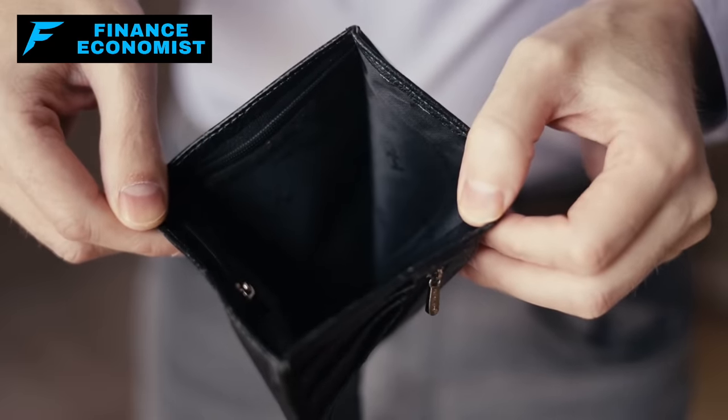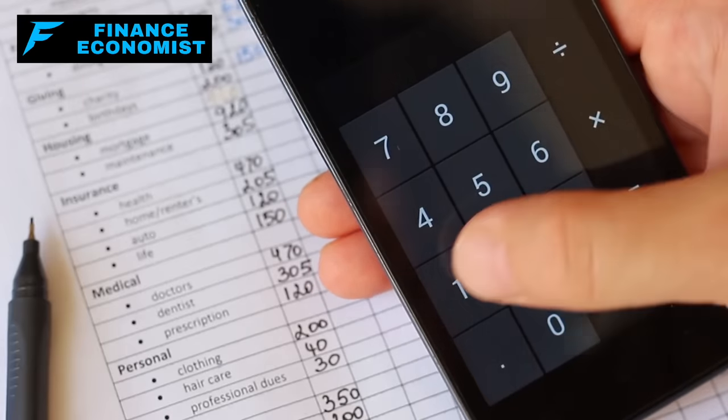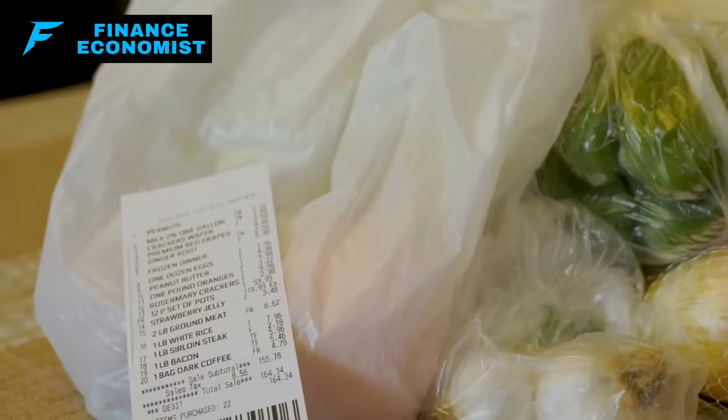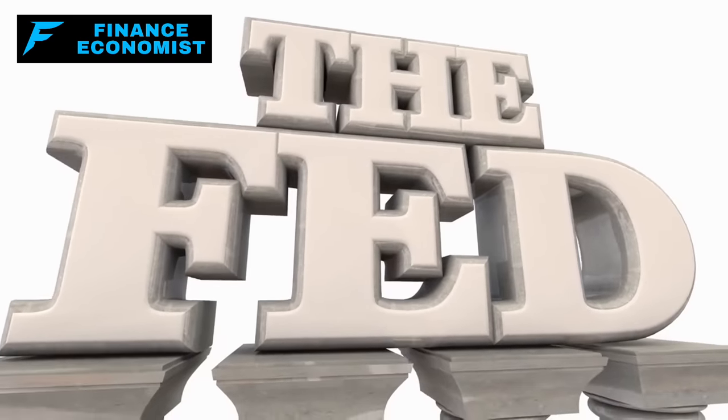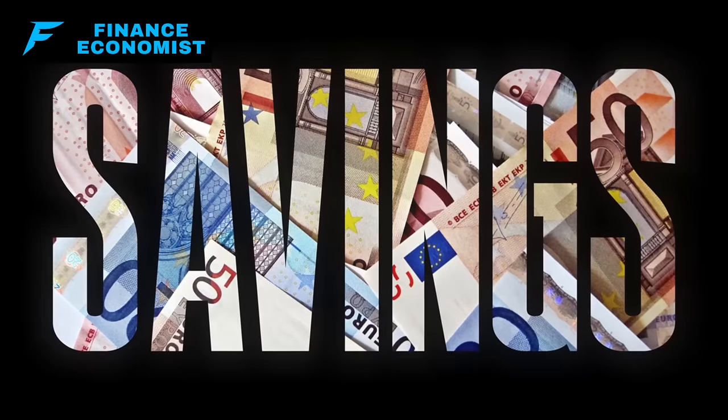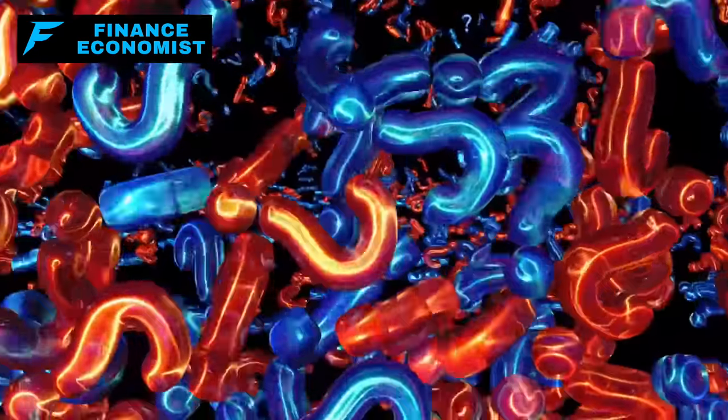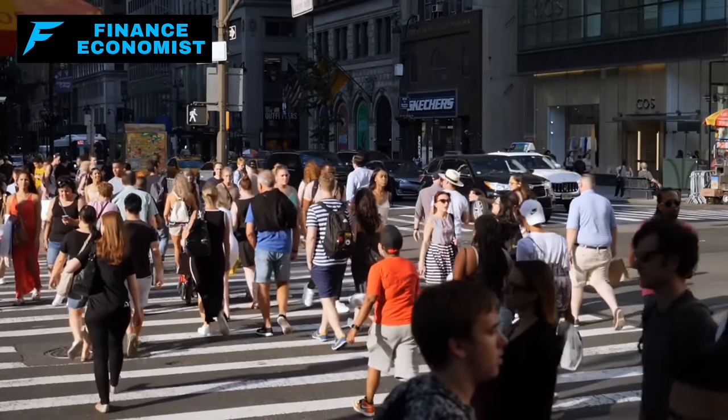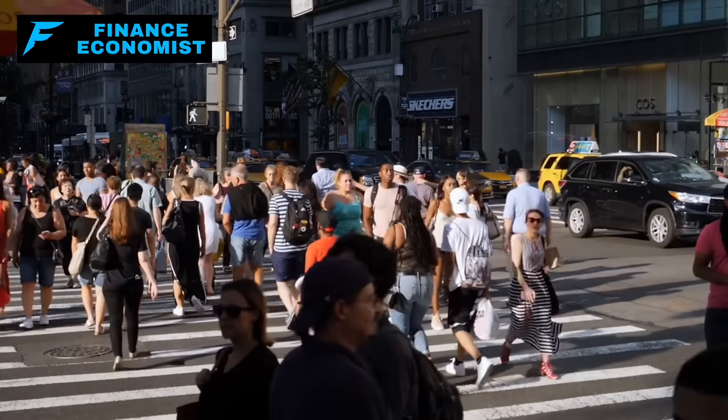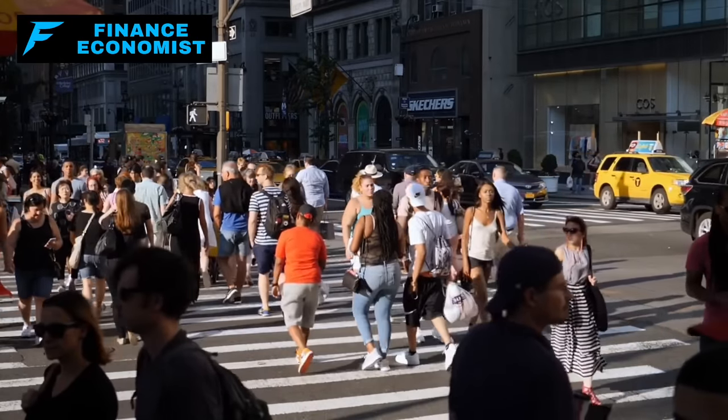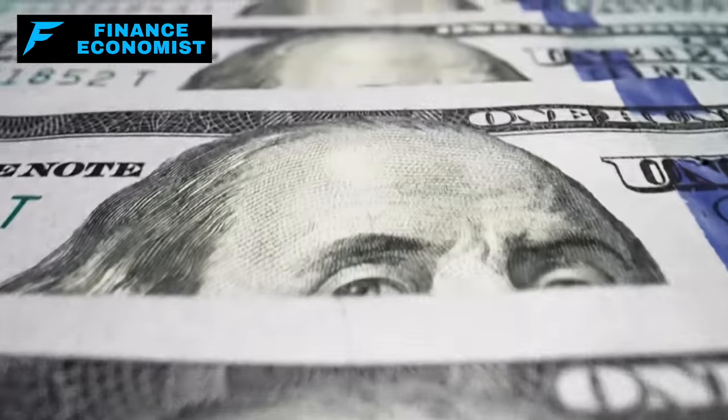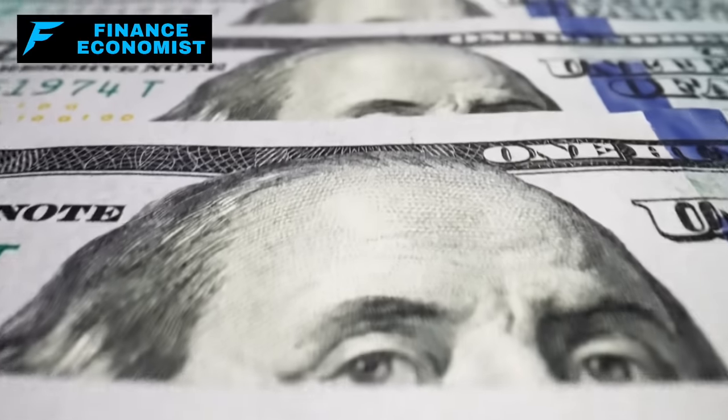But here's the kicker: it's not just about not being able to save. It's about dipping into savings just to keep up with everyday expenses. People are actively using them up to pay bills, buy groceries, and fill up gas tanks. The Federal Reserve's economic data paints a stark picture. We're seeing a consistent monthly drop in savings. What happens when the cushion of savings is gone? What does it mean for the average American family when there's no financial safety net left? It's not just an economic issue. It's about the quality of life and the stress that comes with financial insecurity.